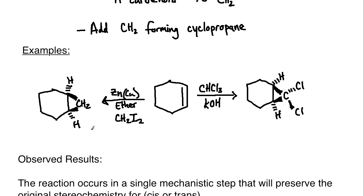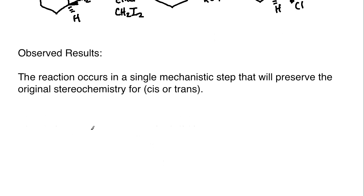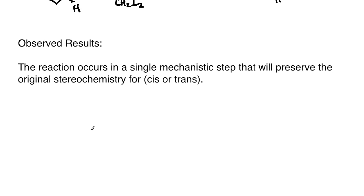In terms of the observed results, what are we going to expect here? The reaction occurs in a single mechanistic step, meaning that it's all going to happen at once, once the carbene or the carbenoid has been formed. And that, whenever we have one step like that, is going to preserve the stereochemistry in these types of reactions for cis and for trans. So, if something started off as cis, then it will maintain that type of stereochemistry around the ring. And then, if it started off as trans, it would also maintain that around the ring.